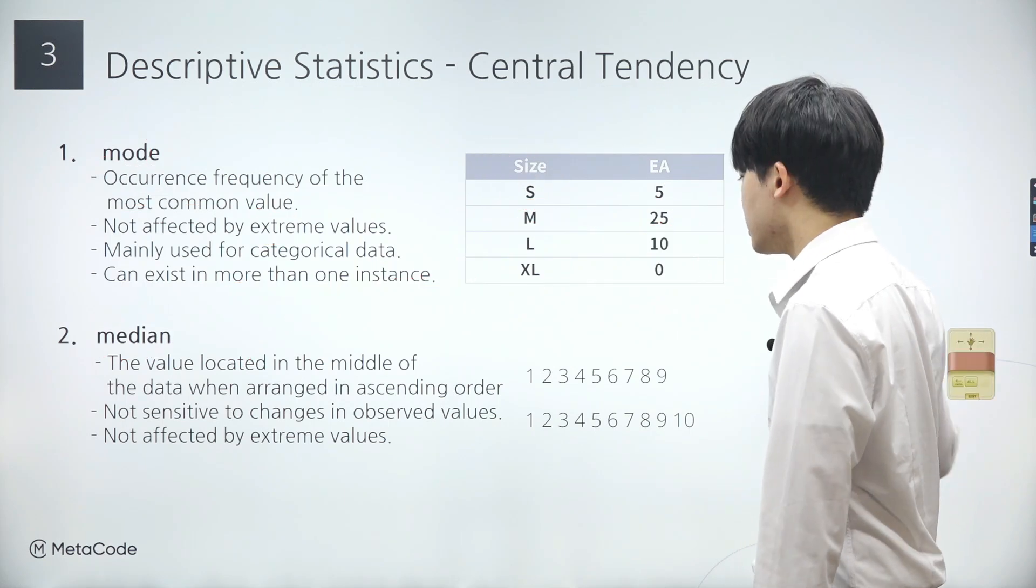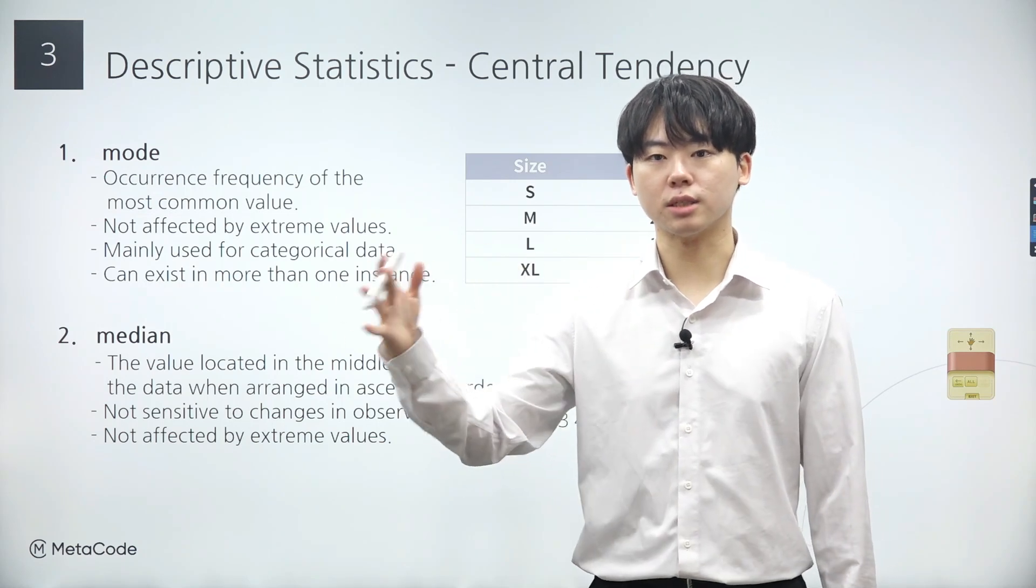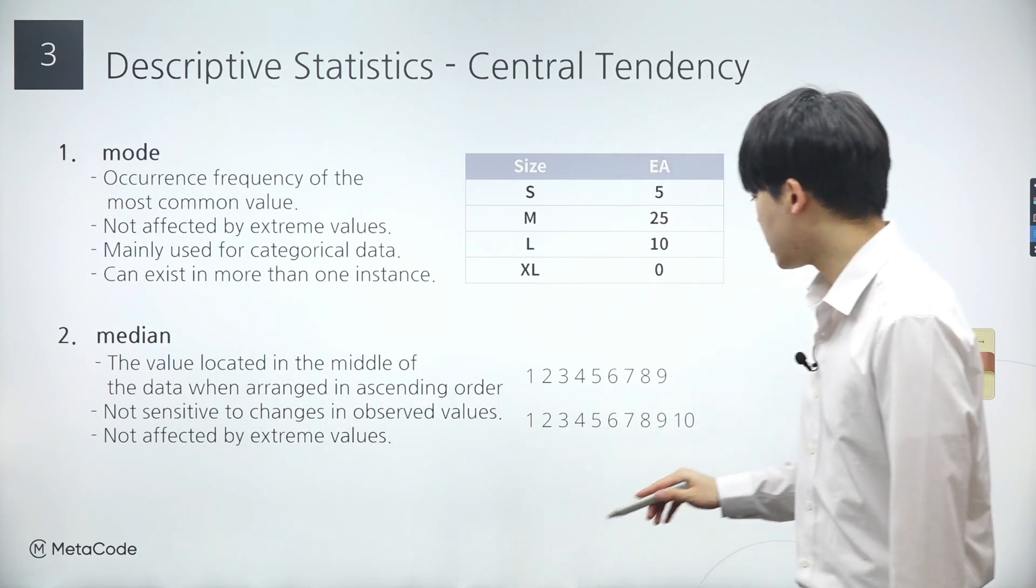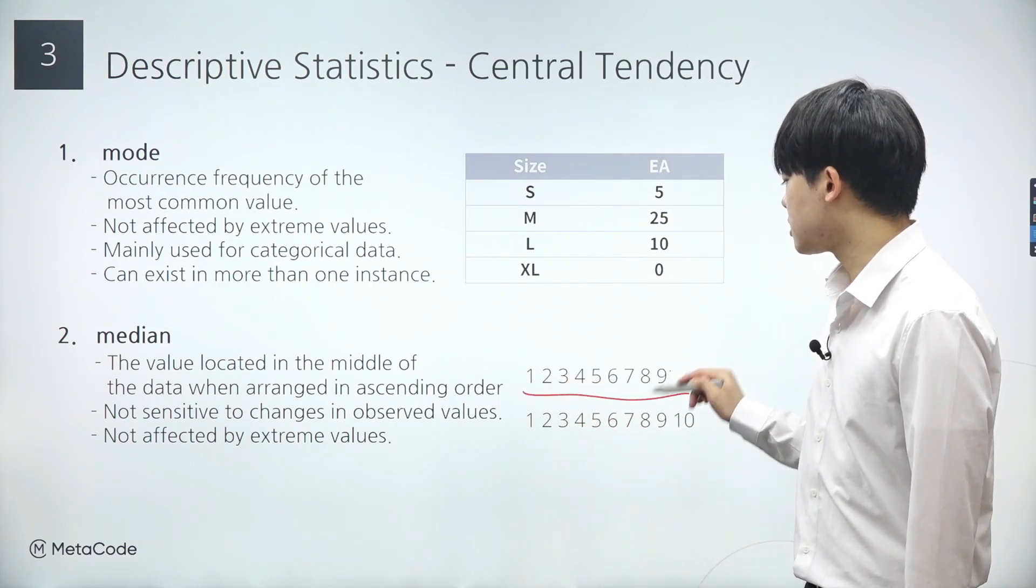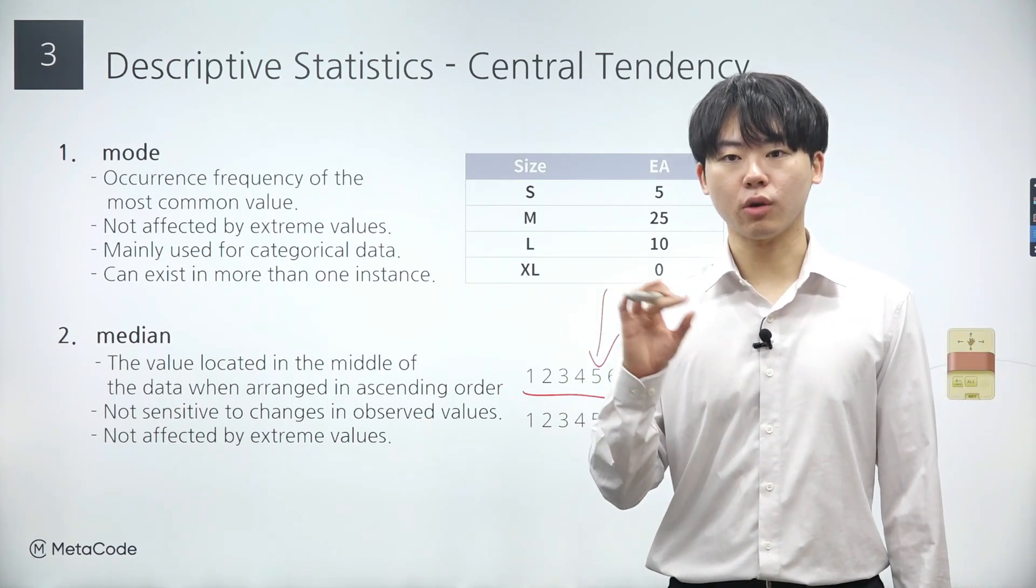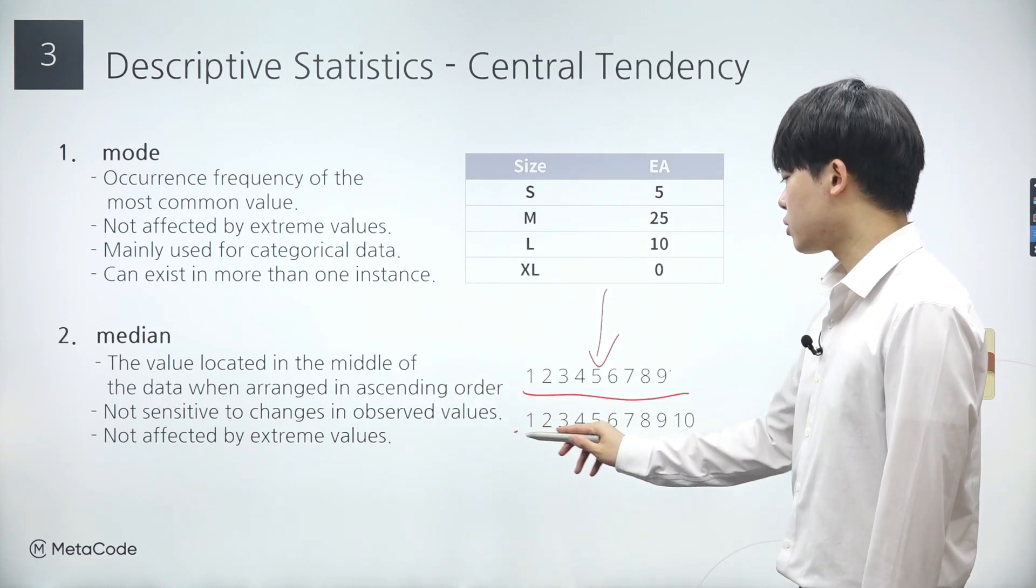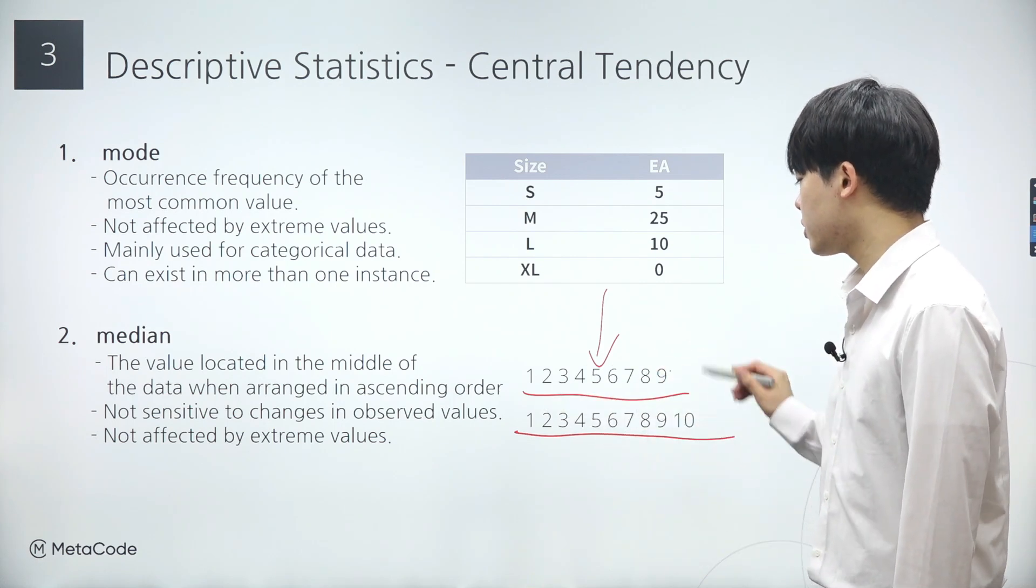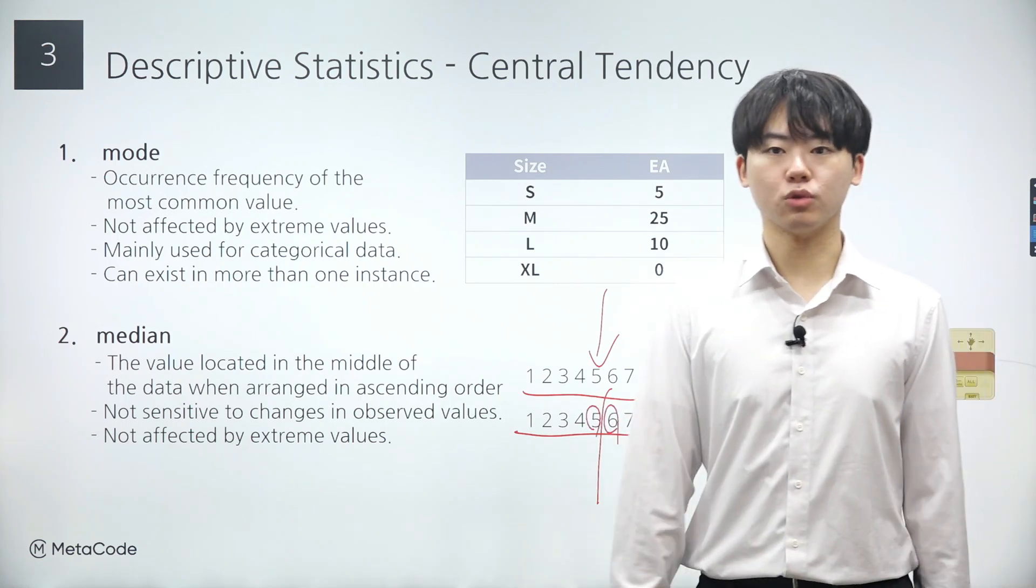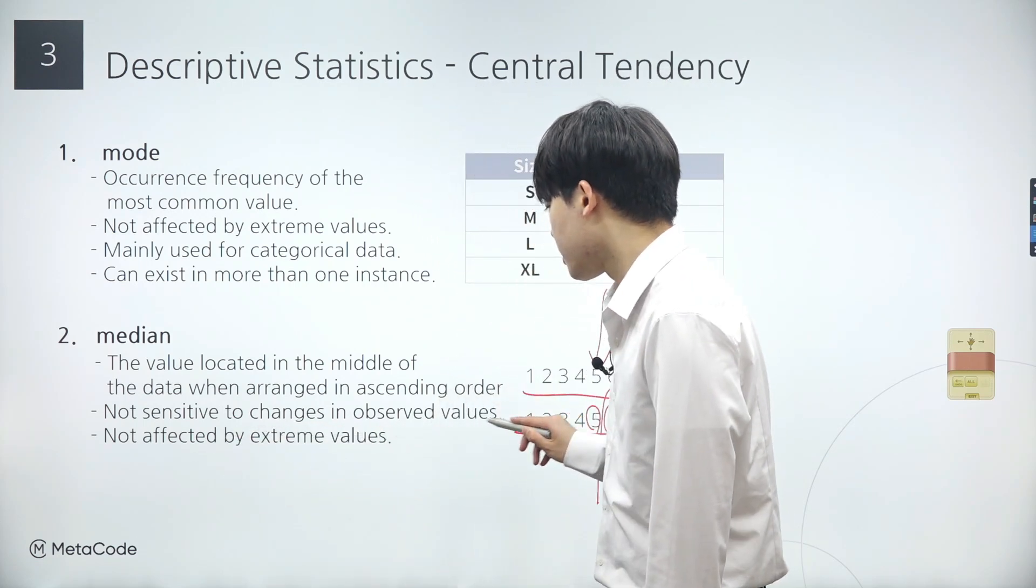The median represents the central value of a data set when its data are arranged in order, regardless of whether they are sorted in ascending or descending order. For instance, if we consider a data set consisting of natural numbers from 1 to 9, the median would be 5, the value at the center. In this example, our data is already sorted. However, if the data set is not sorted, we need to sort it first before determining the median. Now, let's consider another data set comprising natural numbers from 1 to 10 with an even number of data points. There is no single value at the center of the data set. In such instances, the median is calculated as the average of the two central values.